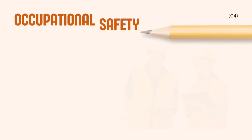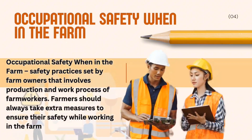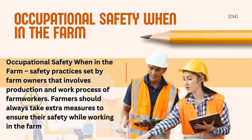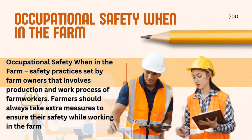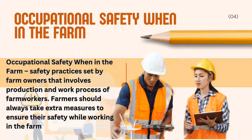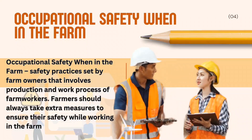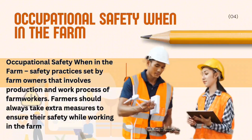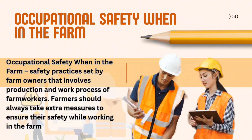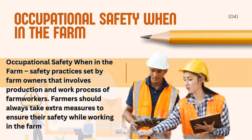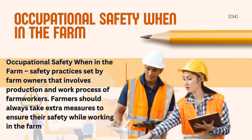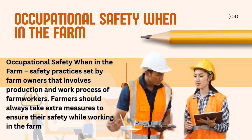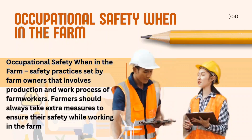Now, what is Occupational Safety in the Farm? Occupational Safety when in the farm is safety practices set by farm owners that involves production and work process of farm workers. Farmers should always take extra measures to ensure their safety while working in the farm.